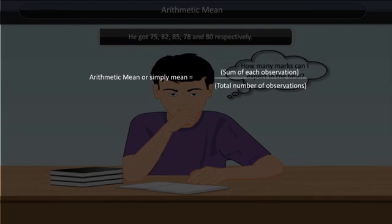Arithmetic mean or simply mean is the sum of each observation divided by the total number of observations.